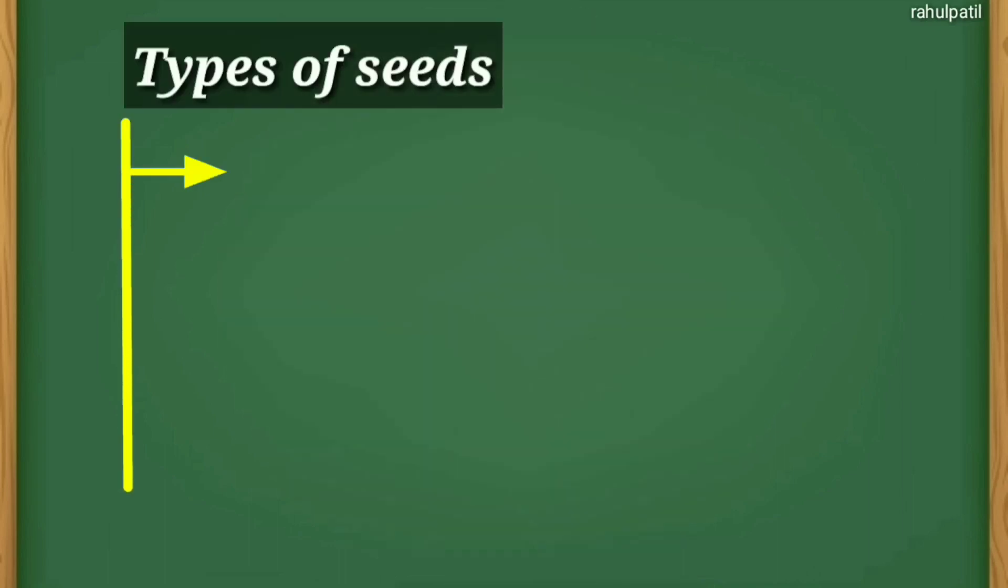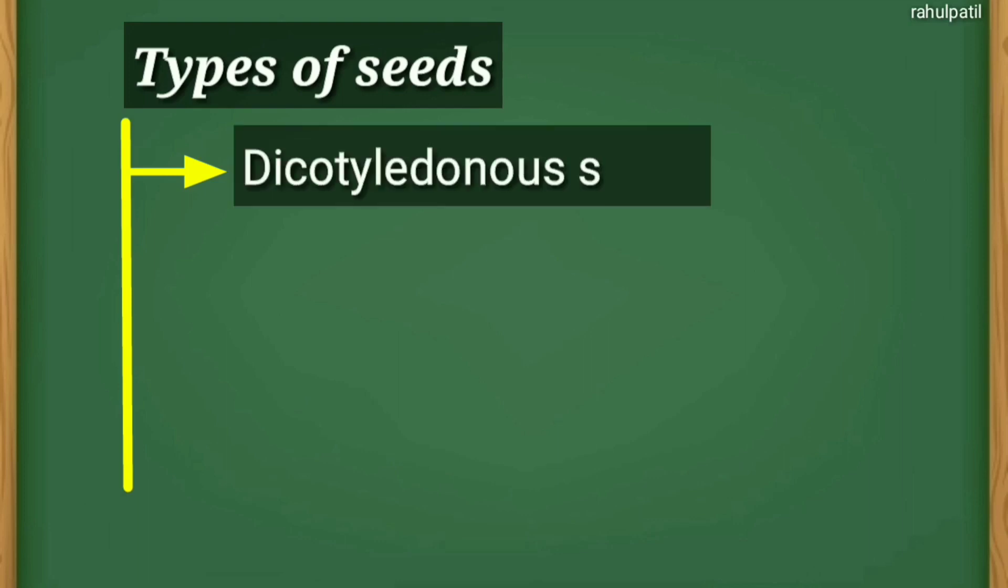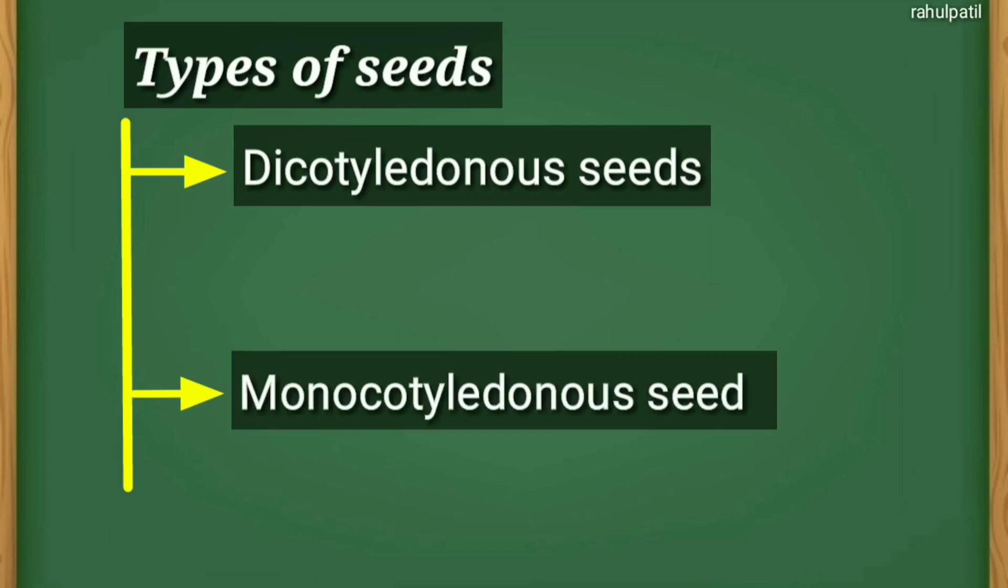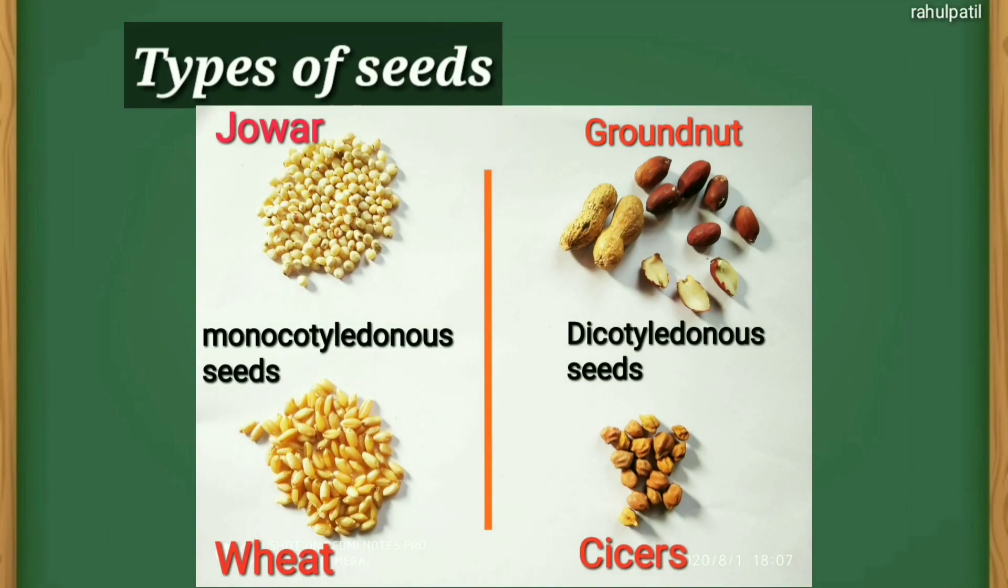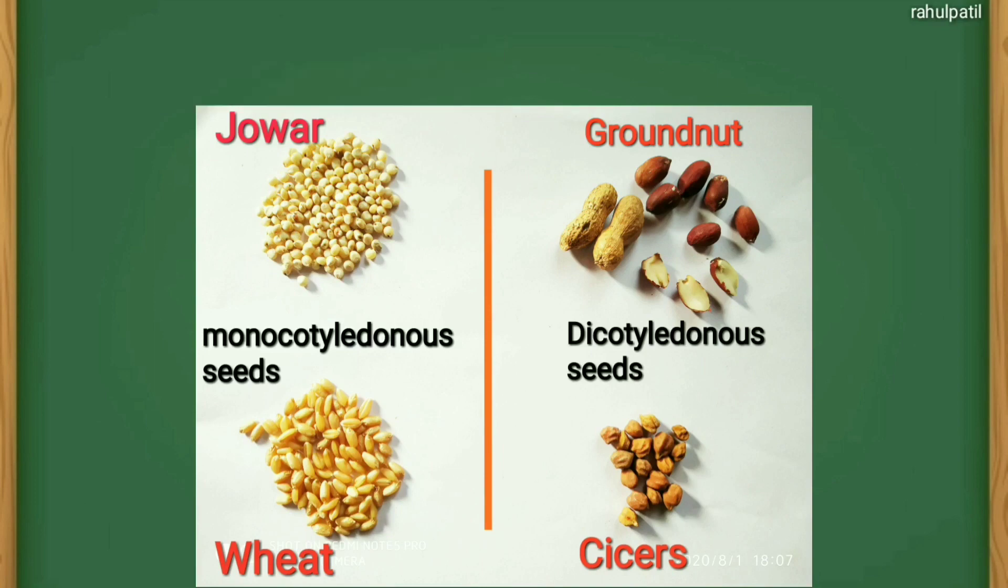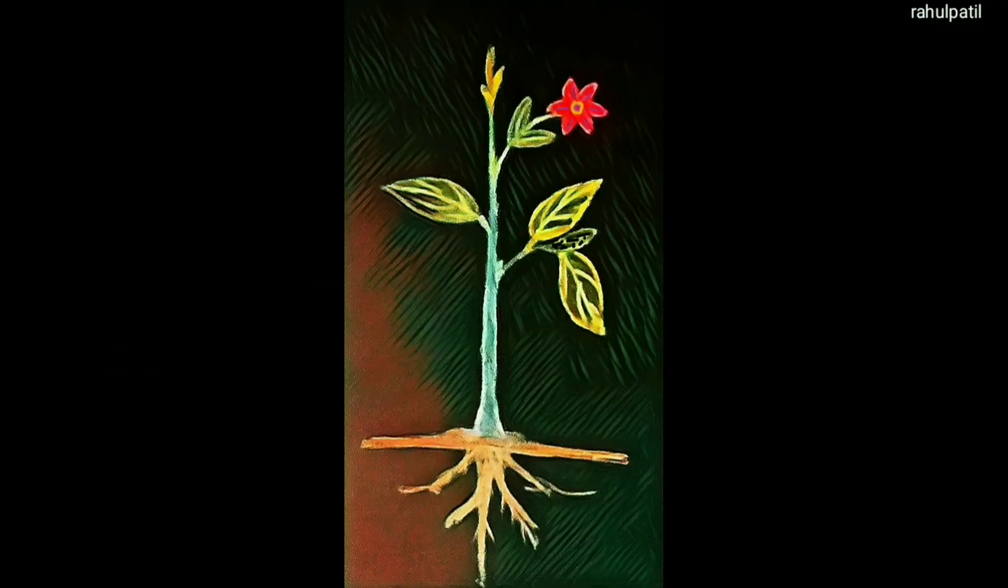Seeds which get divided into two equal parts are called dicotyledonous seeds, whereas seeds which do not divide into two equal parts are called monocotyledonous seeds. Here, jowar and wheat are the examples of monocotyledonous seeds, and groundnut and gram are the examples of dicotyledonous seeds. This is all about the plant's structure and function.